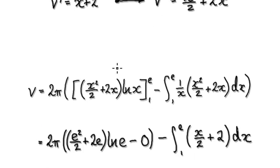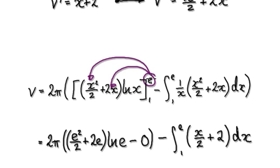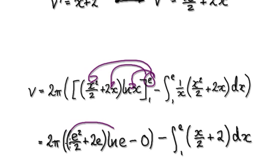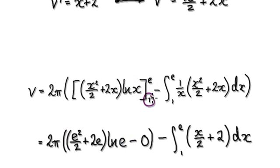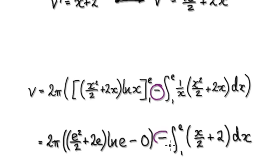Now we need to evaluate this. We substitute E and then 1 and subtract. When we put in E: natural log of E is 1, so that term just multiplies by 1. When we put in 1: natural log of 1 is 0, so that whole bracket becomes 0. So we have our E terms, take away the expression evaluated at 1, which is zero, then subtract the remaining integral term.